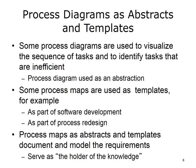Some process diagrams are used to visualize the sequence of tasks and to identify tasks that are inefficient — this is a process diagram used as an abstraction, representing the process to help identify unnecessary or wasteful steps. Other process maps are used as templates, for example as part of software development, where analysts work with users and developers to elicit and document requirements that can be used to generate computer programs or software.